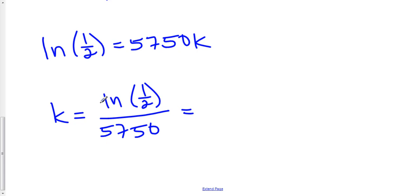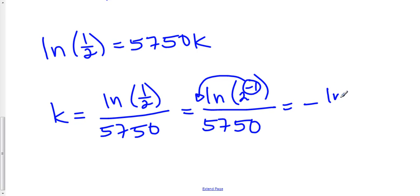However, it's all in the natural log. Let me show you why this is negative. The natural log of one-half can be written as the natural log of two to the negative one. And this is all over 5750. We have a property of natural log that says if we have an exponent, we can just move it in front. This is equal to the negative natural log of two over 5750. And that is why your k is negative.